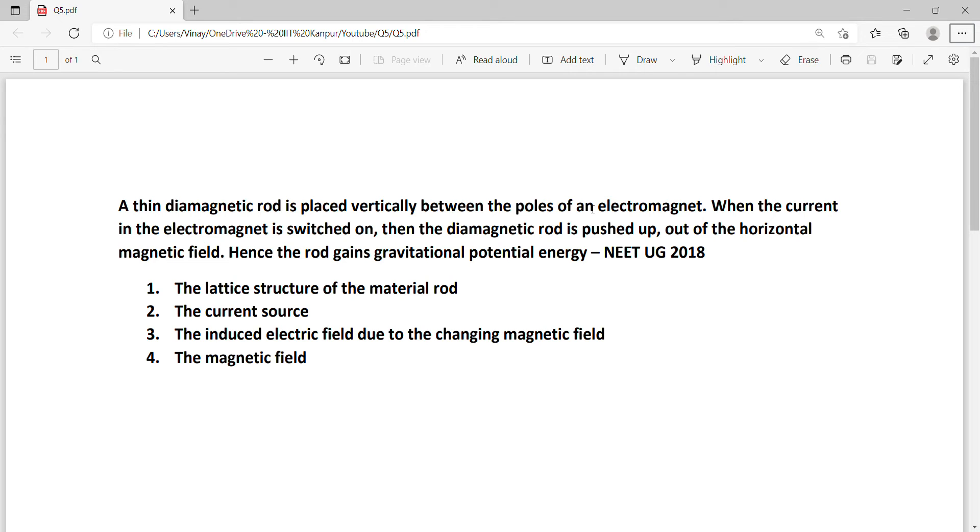When the current in the electromagnet is switched on, the diamagnetic rod is pushed upward out of the horizontal magnetic field. If there's an upward push changing its position, definitely potential energy is stored in the rod because height increases.